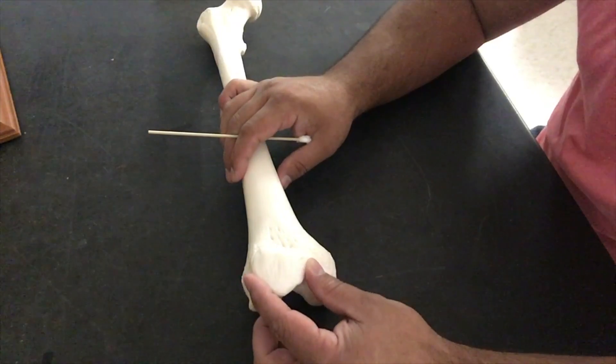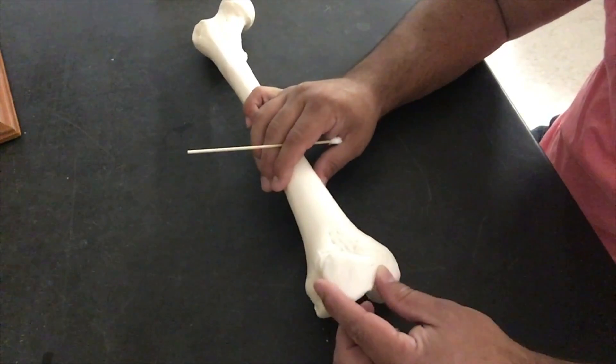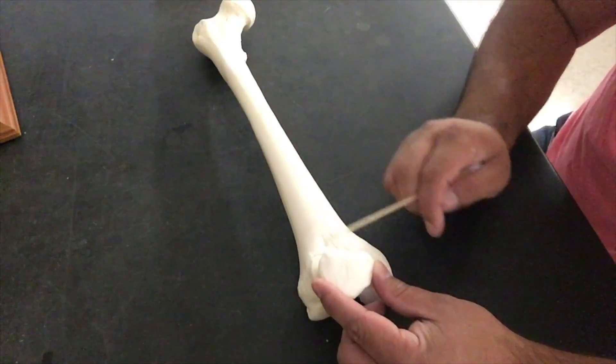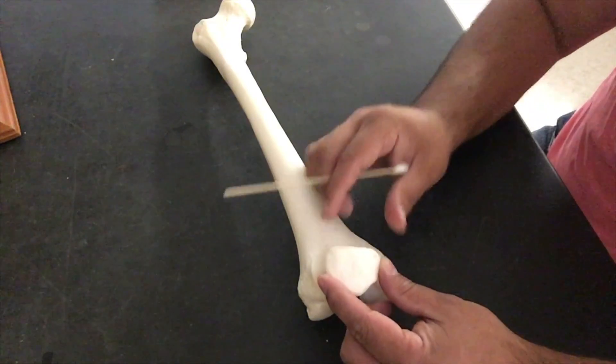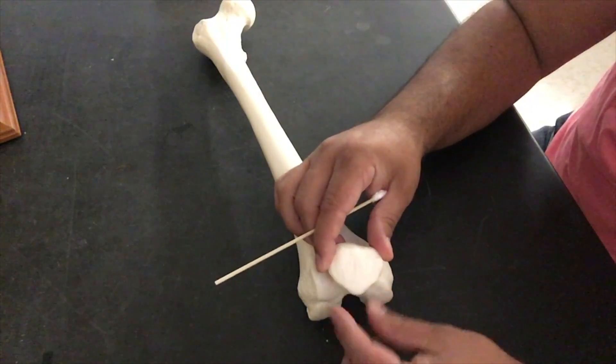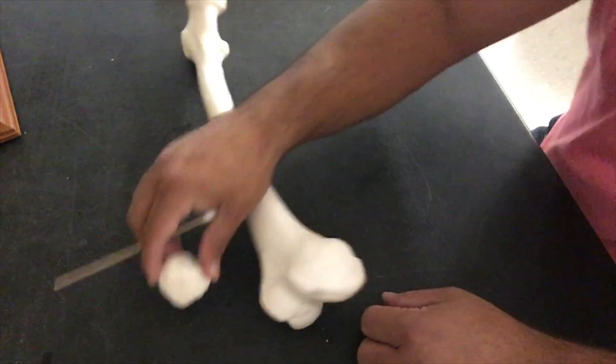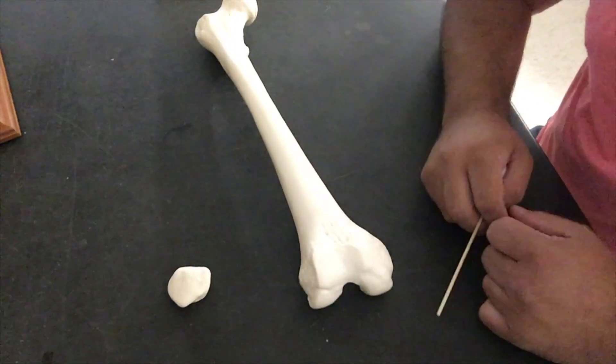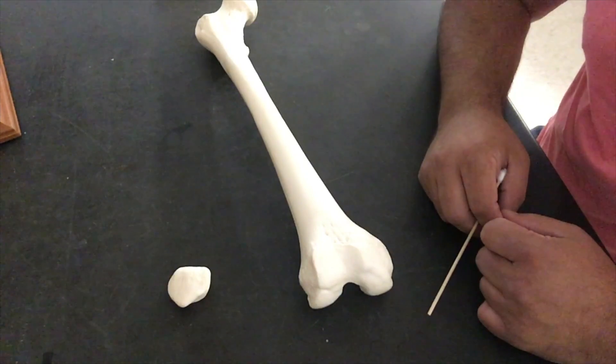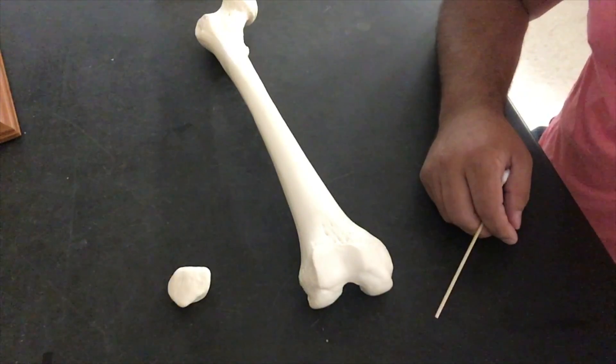It lies within that patellar surface. We have a quadricep tendon above and a patellar ligament below. So that concludes our femur. We'll look at the tibia and fibula next.